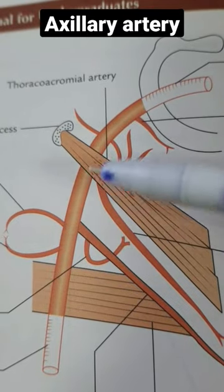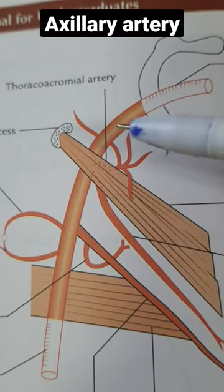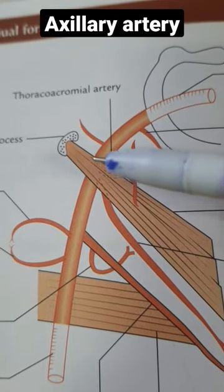It is divided into three parts by the pectoralis minor muscle: the proximal first part, the second part which lies deep to the muscle, and the distal third part.